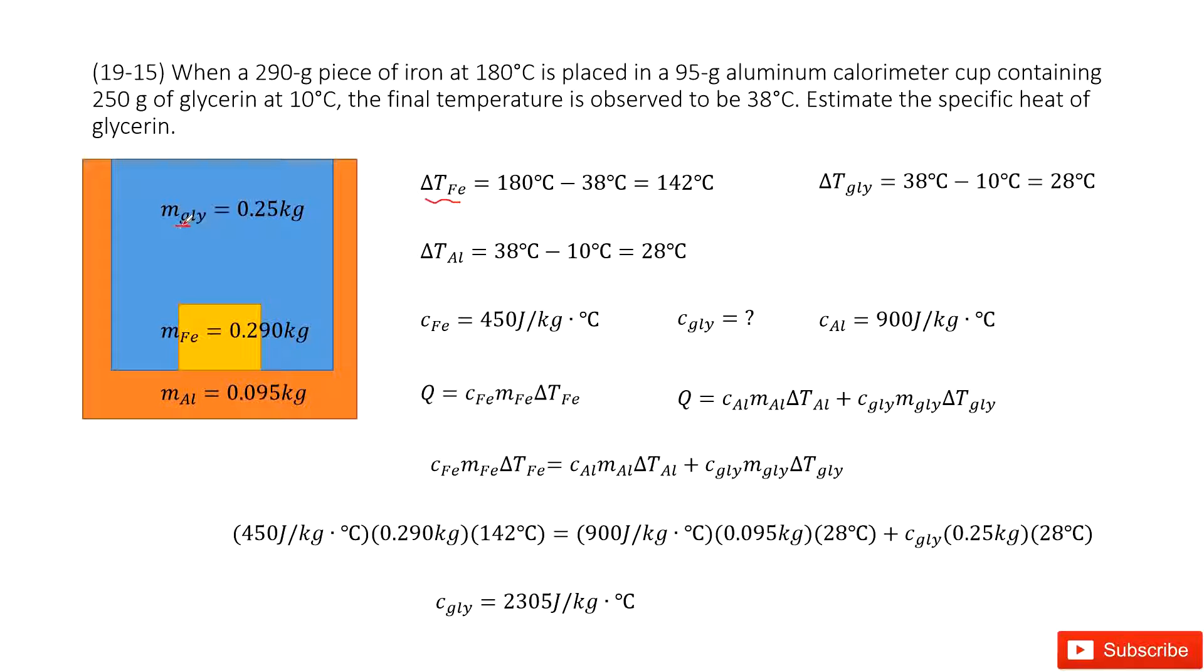Now we look at the temperature changes for the aluminum. The final temperature is 38°C, initial temperature is 10°C. Using final minus initial temperature, we get the difference, 28°C. The temperature change for the glycerin: initially 10°C, finally 38°C, so 38 minus 10, similarly the temperature change is 28°C.